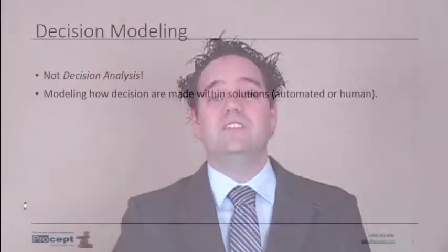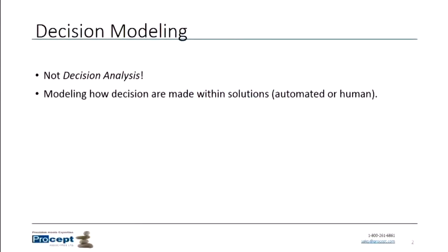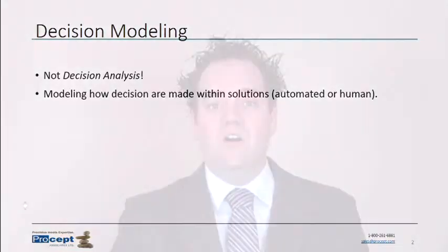We're discussing decision modeling — we're modeling how decisions are made, usually within a solution. These could be automated decisions driven by some business rules, or they could be human decisions that we're trying to model so we can understand how the actors in our solution are behaving and how they're making their decisions.